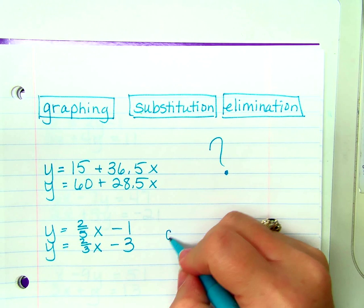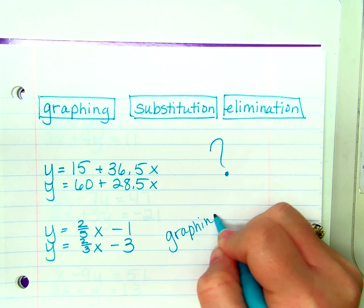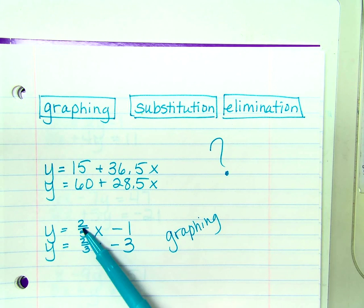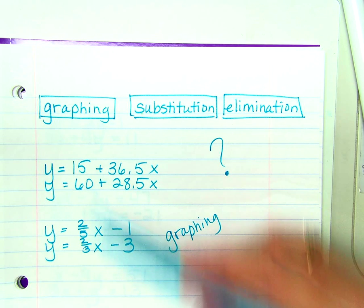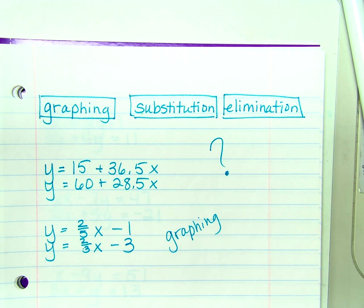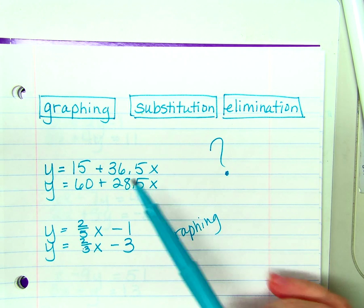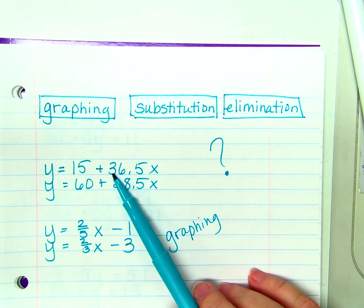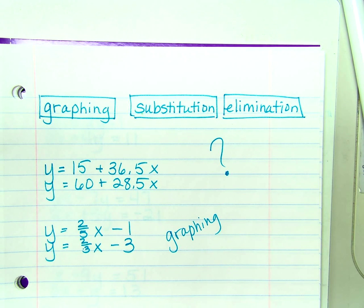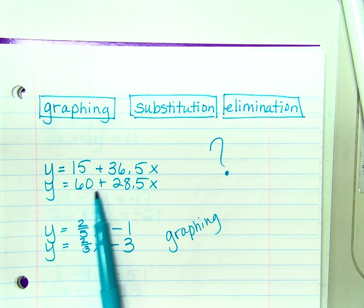While I would solve this one by graphing, because they are set to y equals, they have a nice slope, they have a nice y-intercept, I would not solve this system of equations by graphing. I do not want to have to graph a slope that is 36.5. I wouldn't have to find a graph with a y-intercept of 60.